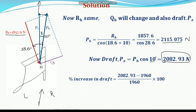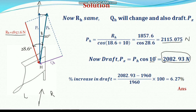Therefore, the change in draft — or percent increase in draft — is: final draft is 2082.93 N and initial was 1960 N when there was no side draft. There might be side draft now because it is pulling at an angle, but we are not bothered about what side draft is, because it will be taken care of by QH and all the parasitic forces. Percent increase in draft = (2082.93 − 1960) / 1960 × 100 = 6.27%. This is the answer. When the plow is pulled at an angle of 10 degrees, there will be an increase in draft of 6.27%. Hope you understand this problem. Goodbye.